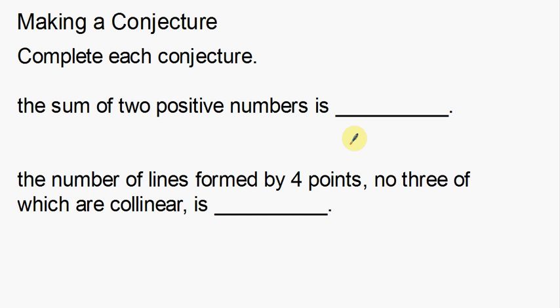In this video, I'm going to talk about making a conjecture. A conjecture is something that you believe to be true based on inductive reasoning. In a previous video, I talked about inductive reasoning — identifying a pattern. Inductive reasoning is basically coming to some conclusion based on prior experience. Making a conjecture is that conclusion based on inductive reasoning. We're going to look at a couple of different examples of using inductive reasoning to come up with what the next logical answer would be.